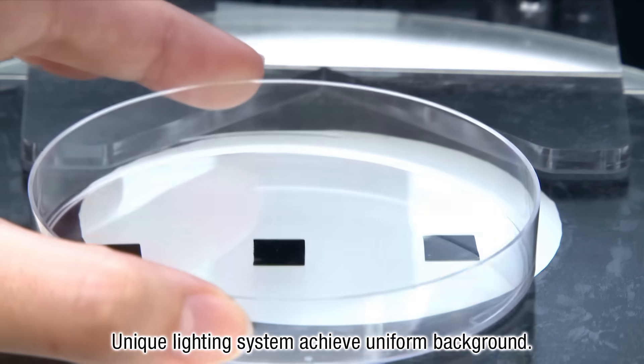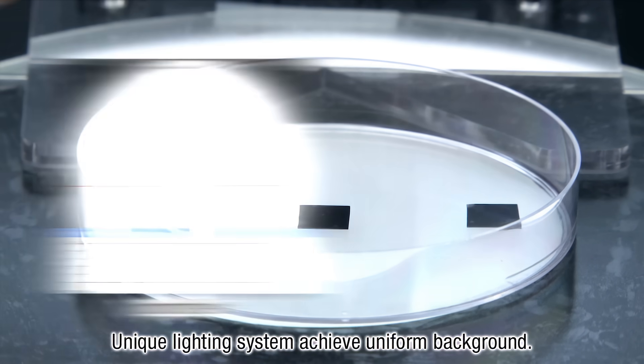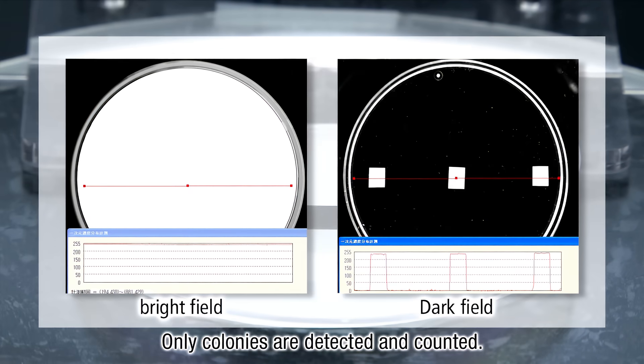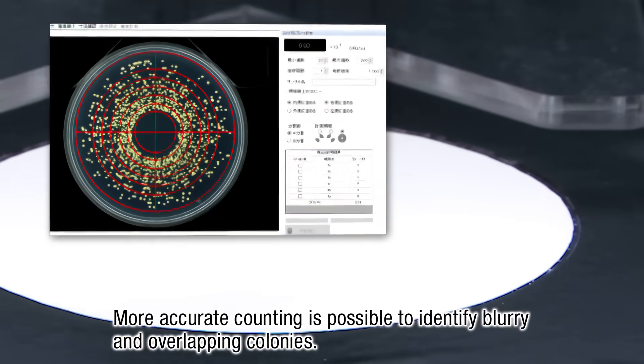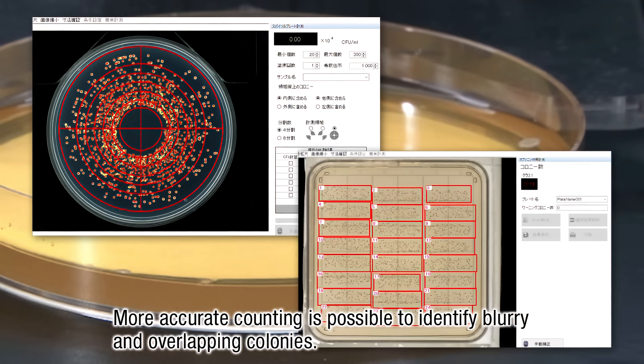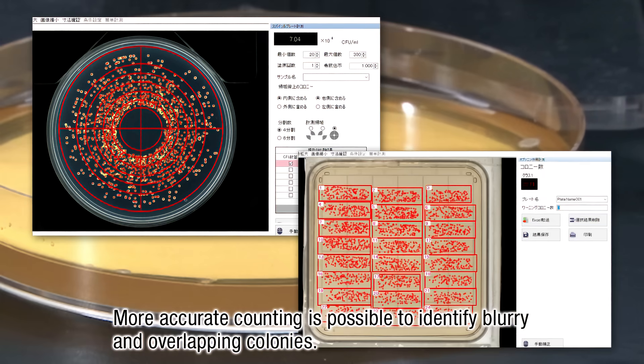More accurately, unique lighting system achieves uniform background. Only colonies are detected and counted. More accurate counting is possible to identify blurry and overlapping colonies.